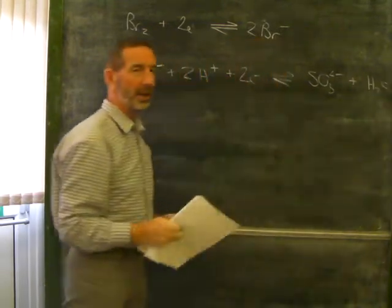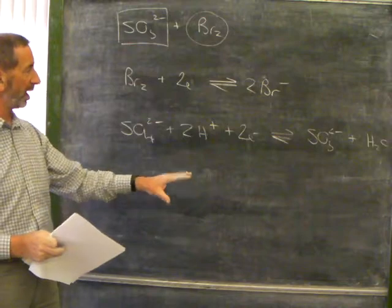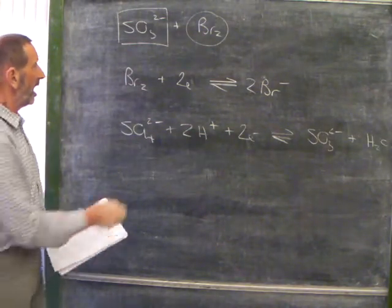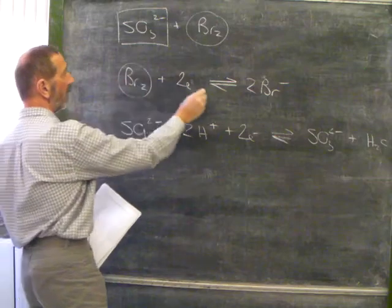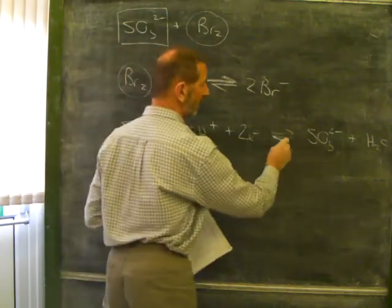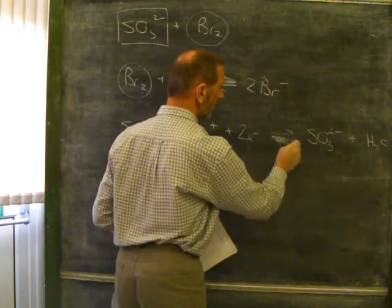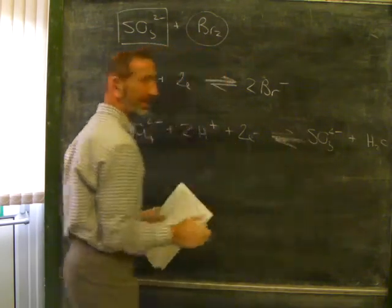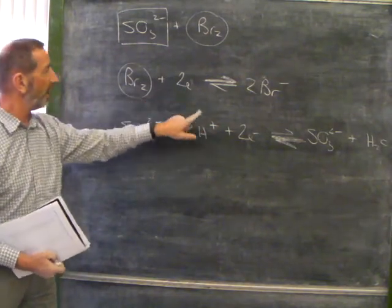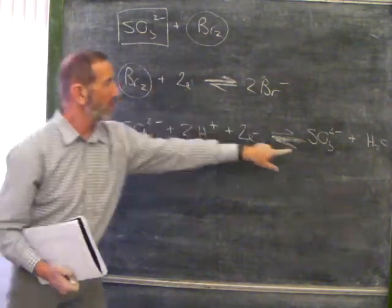It says in the data book that sulfate ions plus two hydrogen ions plus two electrons can turn into sulfite, and water. Again, it's a reversible reaction. The problem we have is working out which way are these reactions going? Well, if we start with bromine, it can only go in this direction. And if we start with sulfite, it can only go in that direction. So, we can't both be gaining electrons. It's not possible for them both to gain.